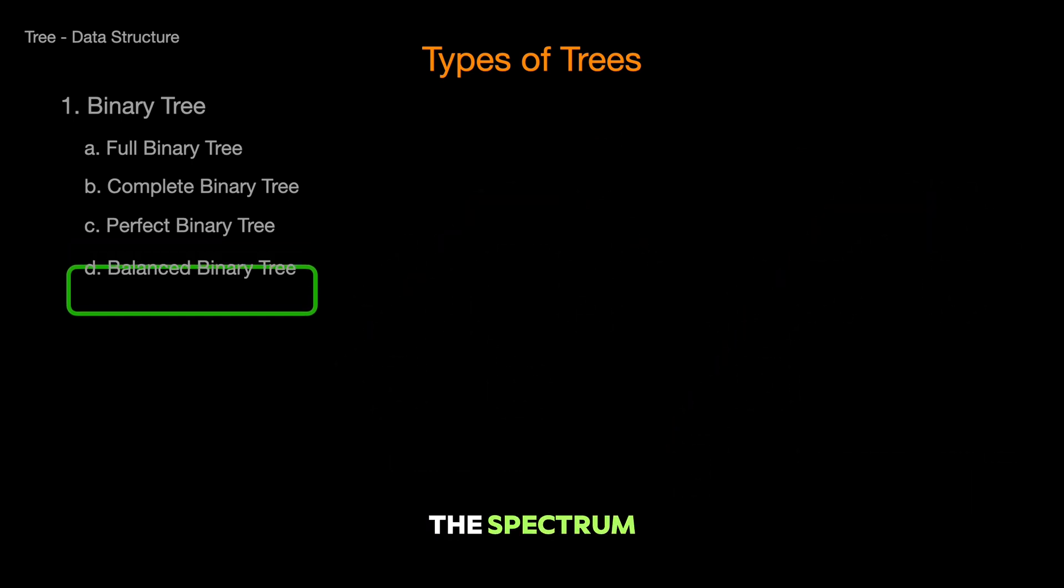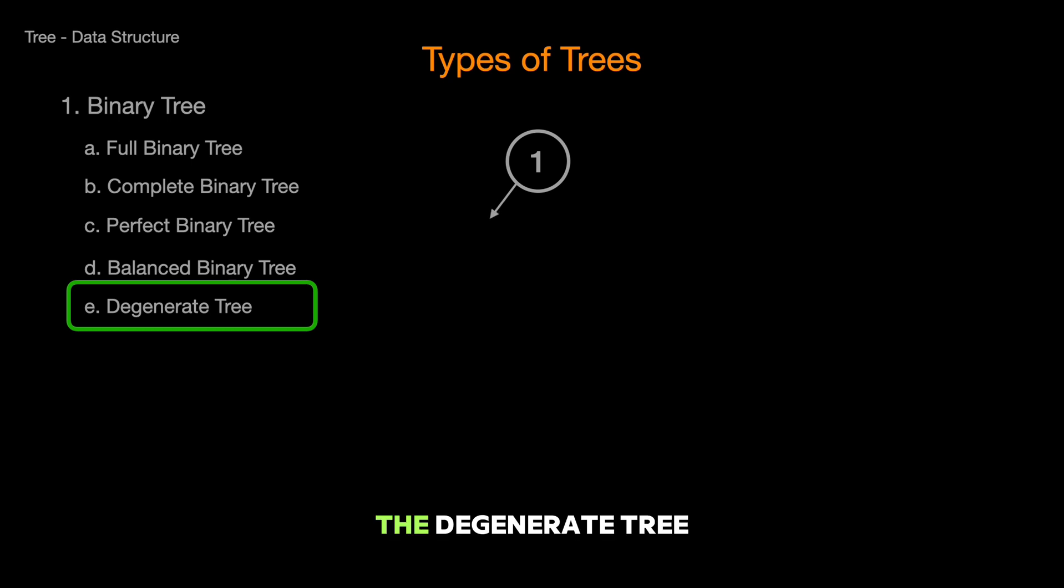And on the other end of the spectrum, we have the degenerate tree, or as I like to call it, the slacker tree. It's when each parent node has only one child, making it look more like a linked list than a tree. It's like a family tree where every generation has only one child.